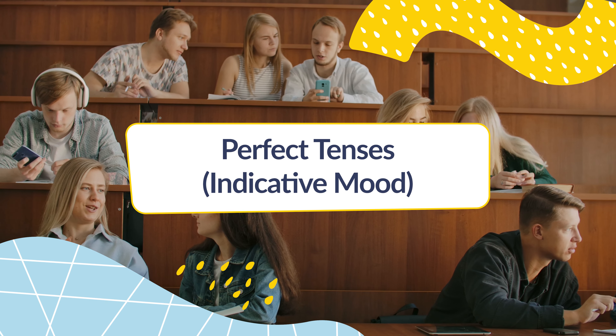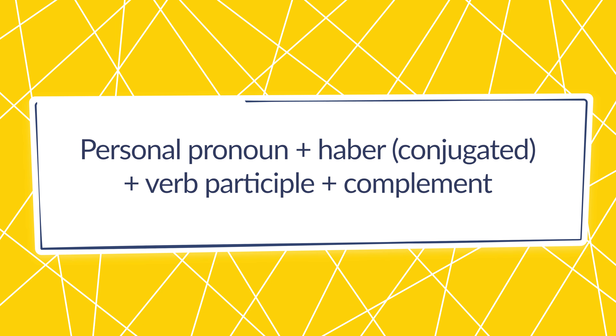Now let's move on to the perfect tenses within the indicative mood. All the actions expressed with perfect tenses conclude close to the moment we're talking about. All sentences expressed in the perfect present, past, or future need to use the auxiliary verb haber, with the action verb always in its participle form. The auxiliary verb and the participle verb can never be separated, no matter what. To put it simply, all you need to do in order to use the perfect tense is to learn the conjugations of haber and know the participle of your action verb.